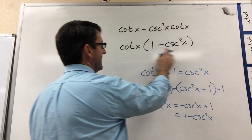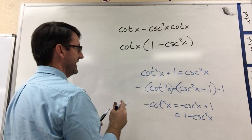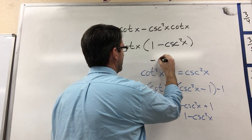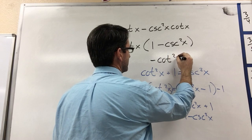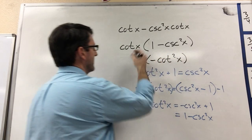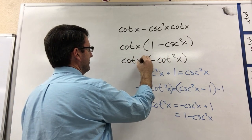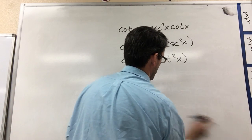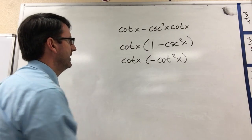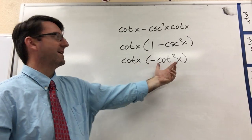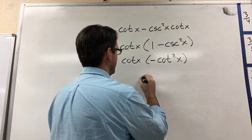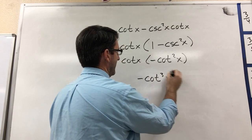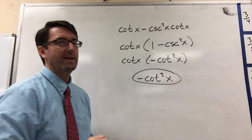So let's replace this 1 minus cosecant squared x with negative cotangent squared x. And we're going to multiply that by cotangent x. And so cotangent x times negative cotangent squared x is going to be negative cotangent cubed x. And that will be our answer.